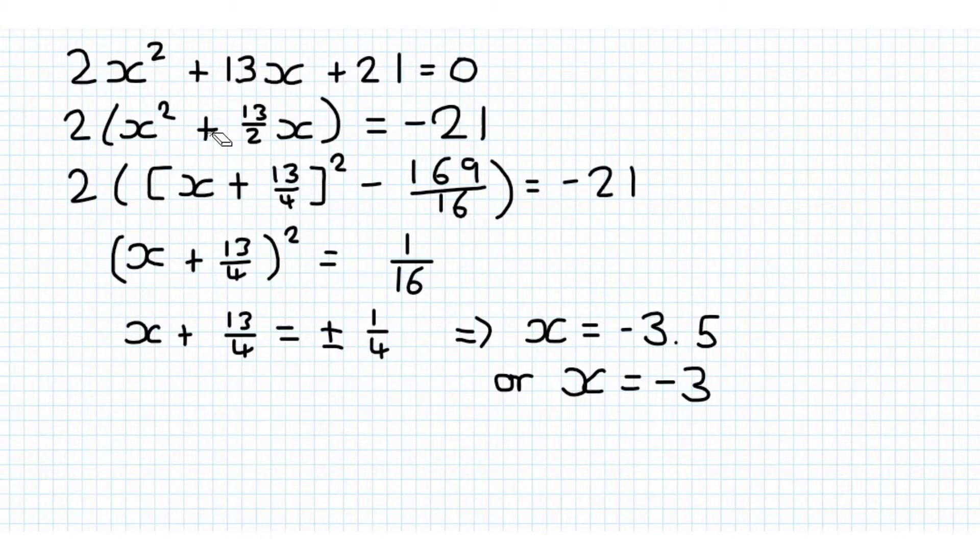We have just taken out a factor of 2, so to check if we multiply this out, we have 2x² plus 13x, so that's a perfectly legitimate move. Then, we have taken what is inside this bracket here, and we have done the whole completing the square.